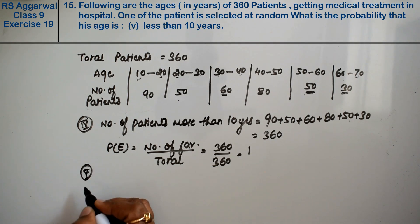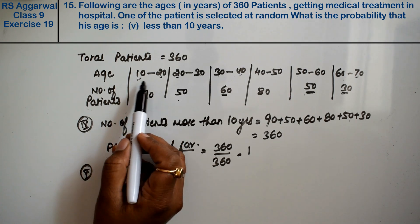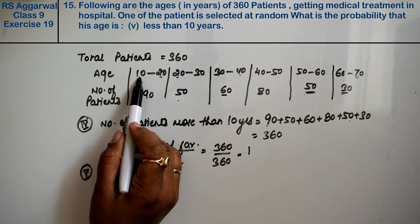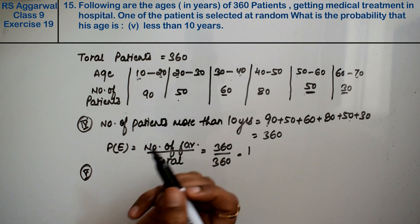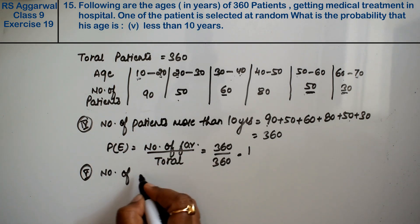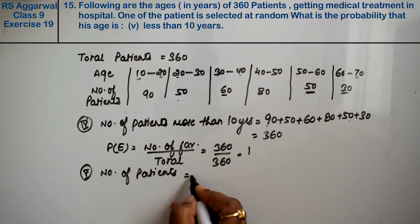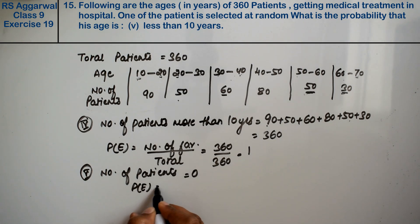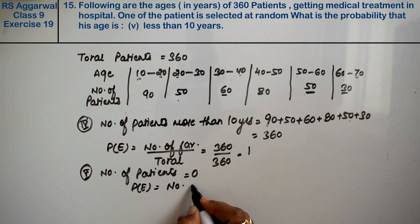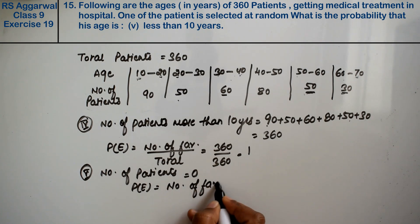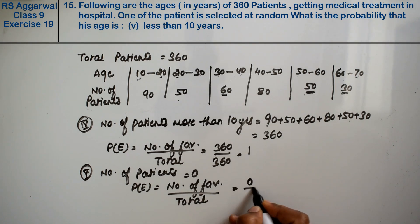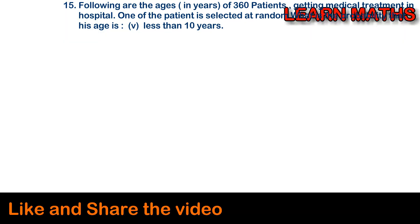Let's do the fifth part. Fifth part says: less than 10 years. There is no patient who is less than 10 years, so number of patients equals 0. Probability equals number of favourable divided by total, which is 0 divided by 360. The answer is 0.